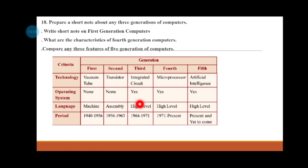Let's learn the full forms. FORTRAN stands for Formula Translation. COBOL stands for Common Business Oriented Language. The 4th generation uses high-level languages. The 5th generation uses artificial intelligence-supporting languages like LISP and Prolog.